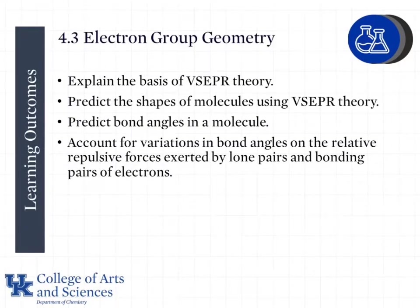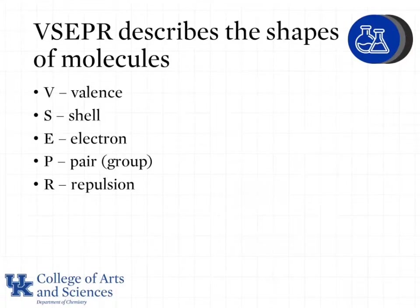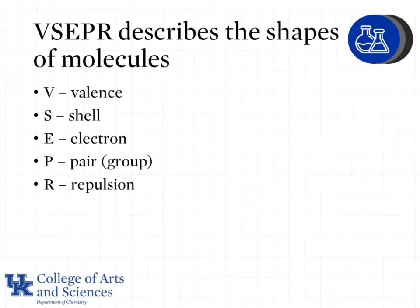Now we're going to look at electron group geometry, also known as VSEPR theory, that tells us something about the shapes of molecules as well as the bond angles in a molecule. VSEPR is an acronym for valence shell electron pair repulsion. 'Pair' is not the best name — it should be 'group,' because when we look at a single, double, or triple bond, we treat that as one group even though it has more than one pair of electrons.